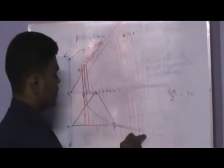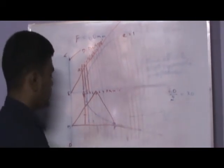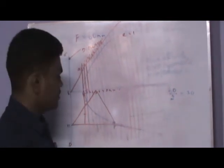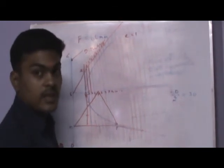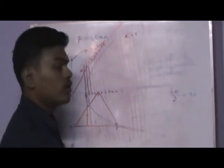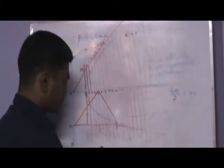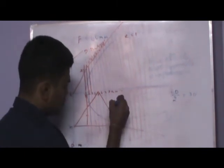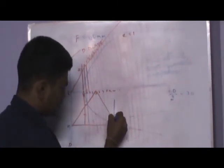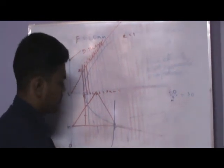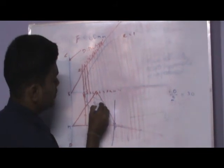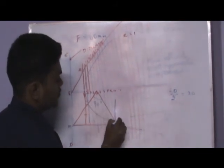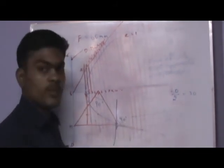Draw a straight line from M — it will touch the parabola at point P, and that is your tangent. To draw the normal, take MP (the tangent) as the base and draw another perpendicular line through P. That line is your normal. Note that the angle between the tangent and normal is 90 degrees because it is perpendicular.